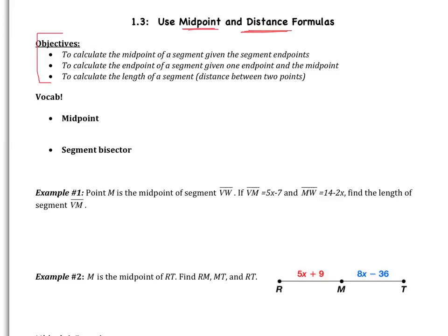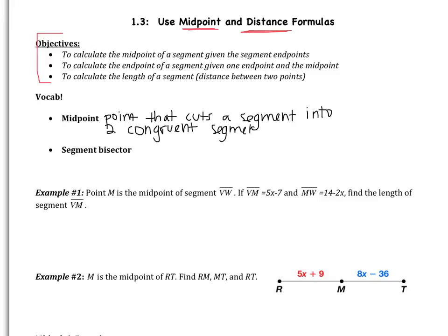First, let's talk about what exactly a midpoint is. A midpoint is just the point that cuts a segment into two congruent segments. So let's draw this out. I have a segment, and the midpoint is just right in the middle. Normally it's denoted M. It makes the two resulting segments congruent — so they're going to have the same length, maybe 10 and 10. That's what a midpoint does.